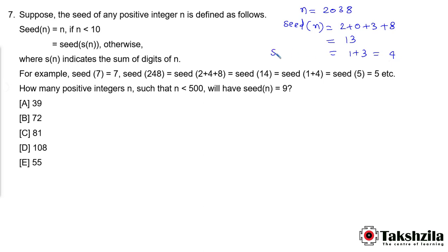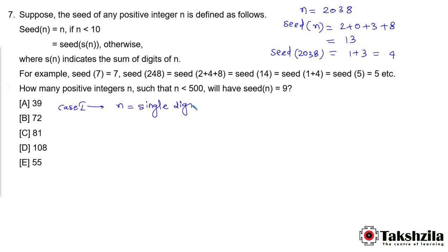So seed(2038) = 4. Basically we keep adding the digits until we get a single-digit result. The question asks: how many positive integers n less than 500 have seed(n) = 9? First case: n is a single-digit number. Seed(n) = 9 happens only when n = 9, so there is only one possible number here.